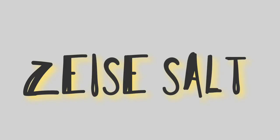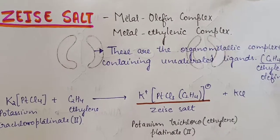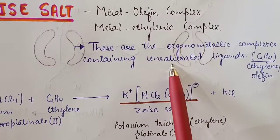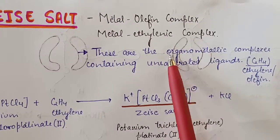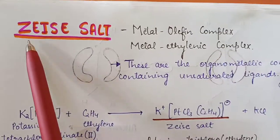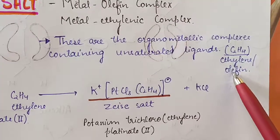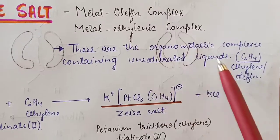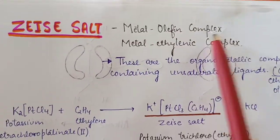In this video we are going to study about Zeise's salt, which is also known as metal olefin complex or metal ethylenic complex. These are organometallic complexes containing unsaturated ligands — ligands having double bonds. When a metal forms a complex with such double-bonded ligands, the resulting organometallic complex is known as a metal olefin complex or metal ethylenic complex.